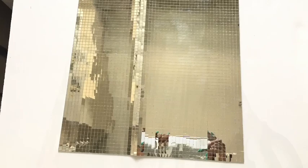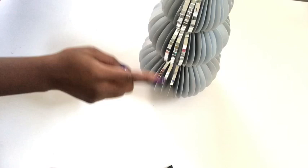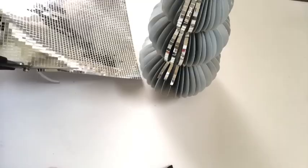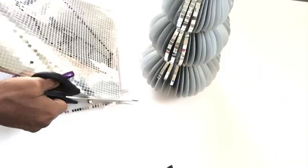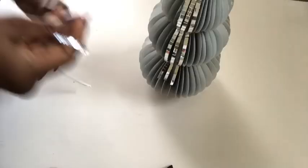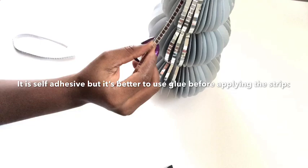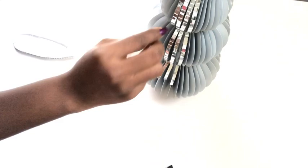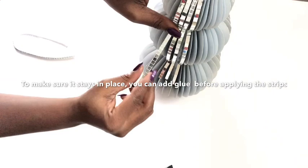I'm using these mosaic mirror tiles for the first vase and the link will be in the description box below. I cut them into singular strips and then I adhere them to the vase. It's self-adhesive and easy to use, but I will advise that you attach the strips with a hot glue gun just to make sure that it stays in place. This requires a lot of patience, but I didn't mind because I know that at the end of the day I'm going to have a beautiful glam vase.